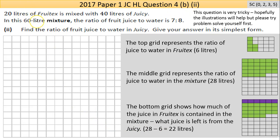Now part C — this wrecked my head, which is why I made this little chart. This is not part of the question. 20 liters of Fruitex is mixed with 40 liters of Juicy, giving a combined 60-liter mixture. In this new mixture, the ratio of fruit juice to water is 7 to 8. We were never told the ratio in Juicy, so we need to back-work using this — that's where the problem lies. Find the ratio of fruit juice to water in Juicy in simplest form.